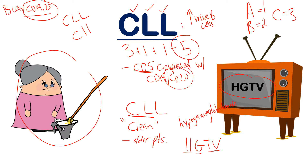Hypogammaglobulinemia — that mouthful just means decreased immunoglobulins. This is what's confusing: with CLL, you'd imagine that increased naive B cells would turn into plasma cells and produce more immunoglobulins. But these are abnormal B cells — hinted at by the CD5 marker — so this increased proliferation of abnormal B cells actually lowers the immunoglobulins. So HG helps you remember hypogammaglobulinemia. The T stands for thrombocytopenia — decreased platelets.